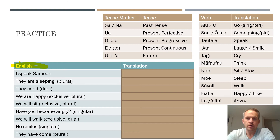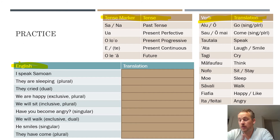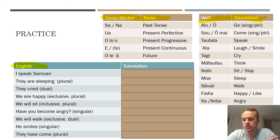To help construct these sentences, I've got the tense markers and a verb list on the slide. For tense markers: past tense is sa or na; present perfective is ua — meaning something that happened in the past but whose effects are still felt presently; olo'o is the present progressive, used when a verb would take '-ing' in English; and the e/te tense is present continuous for describing attributes.